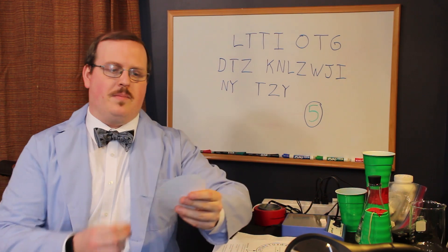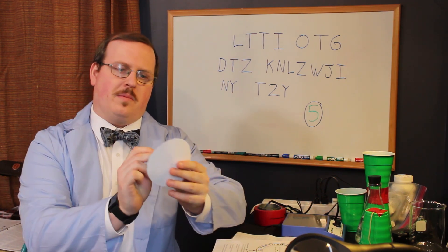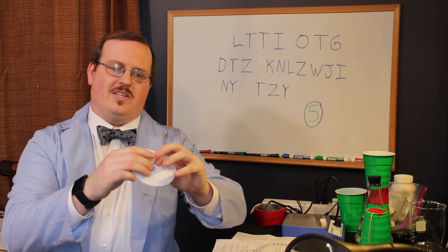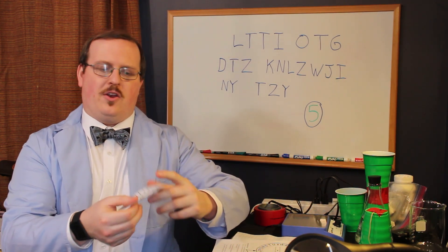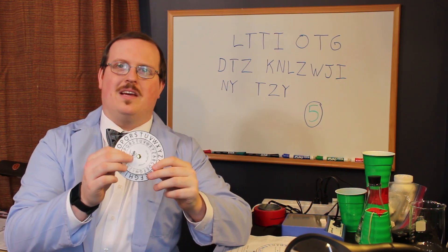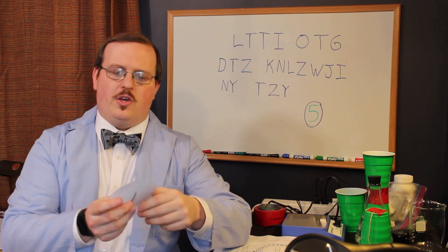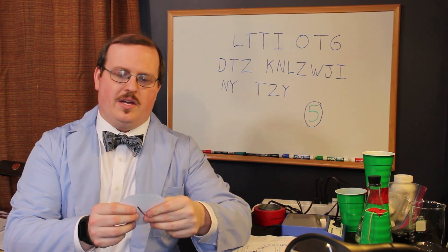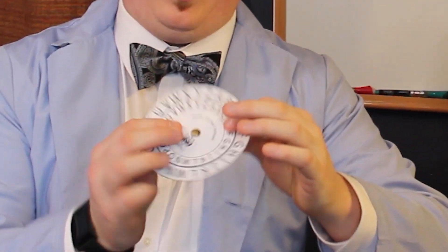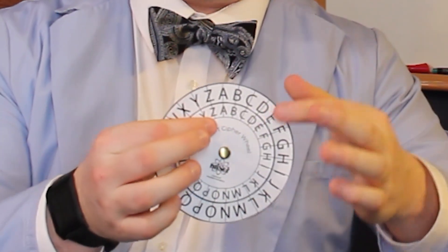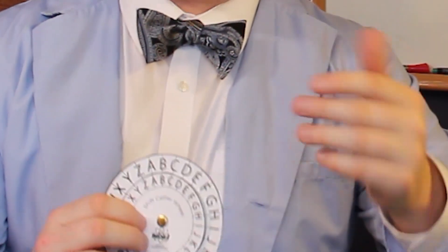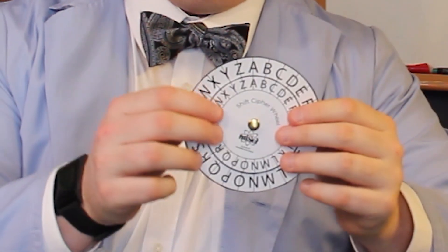Once you've cut out the wheels, two different ones on the thick lines on the outside, you're going to take your brass fastener and put it through the middle of each on the big dot. Once it's through, you can fold down the arms and you're going to have a cipher wheel that spins. Now just like we saw in the video, you're going to be able to line up your letters to write a message. Start with the letters lined up so A is lined up with A, D is lined up with D, and so on.